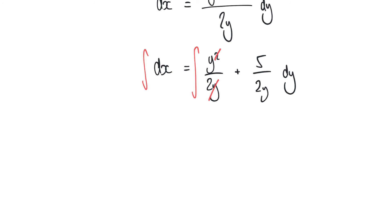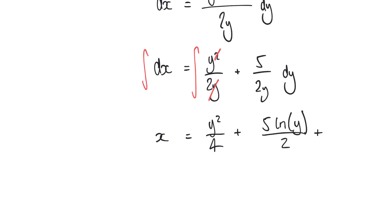Integrating dx on the left-hand side gives us x, just like in the previous example. Integrating (y/2 + 5/2y) with respect to y gives us y²/4 plus 5 times the natural logarithm of y all over 2, plus the unknown constant c. If you're unsure where this integration comes from, it's best to refer to a table of standard integrals.